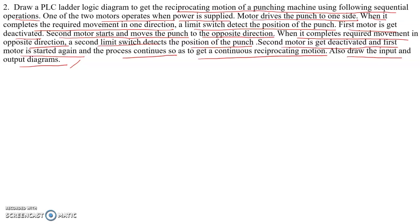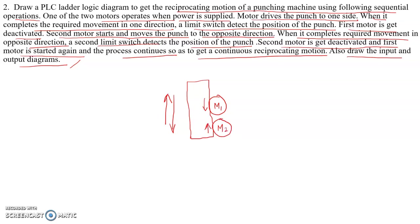First we need to visualize the problem by drawing a simple diagram of the punch, which has two motors and two limit switches. The punch reciprocates in the downward and upward directions. We have motor M1 for the downward direction. There is a limit switch at the top, LS2, which senses the upward position of the punch.